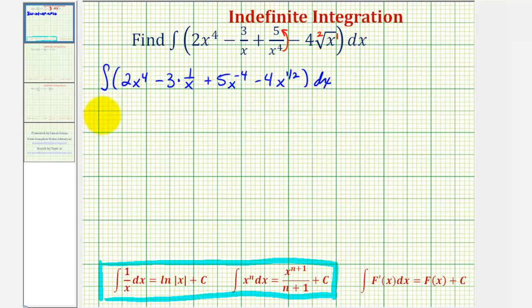And now we're ready to integrate. To integrate 2x to the fourth, we'll have 2 times the antiderivative of x to the fourth, which would be x to the fifth divided by 5.